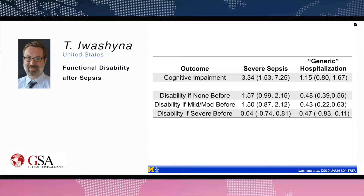We compared the likelihood of developing new disability after sepsis to your likelihood of developing new disability after other generic hospitalizations — where you weren't in the ICU, weren't mechanically ventilated, didn't develop sepsis. Consistently there was a much bigger increase in disability after sepsis than after other hospitalizations. It doesn't look like this was just hospitalization — there was something about sepsis specifically.